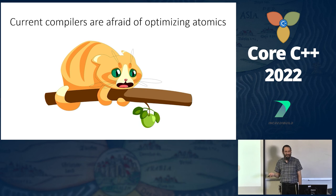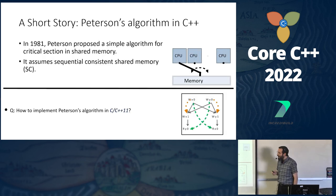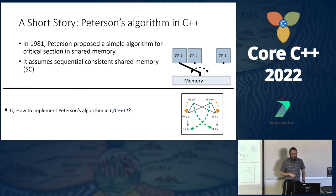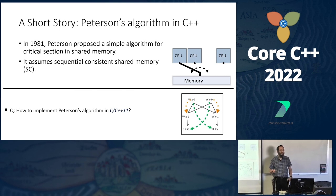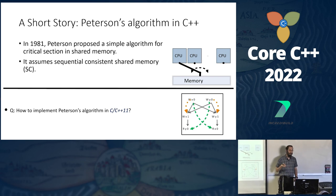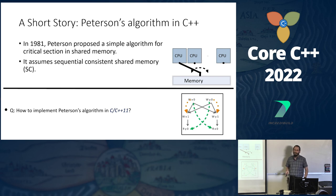Story time: in 1981, Peterson proposed a mutual exclusion algorithm for a critical section with two threads, assuming sequential consistency. At some point someone asked: what if I want to implement this with the C11 memory model? What could go wrong?